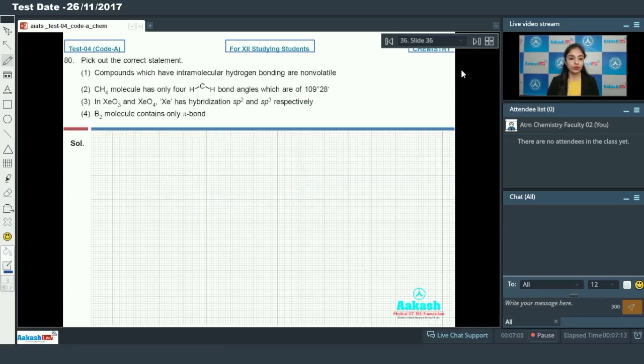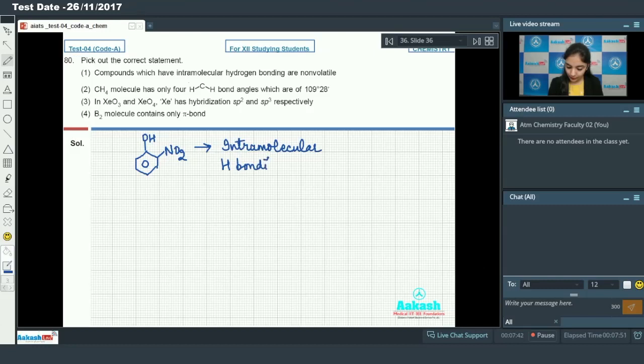Moving on to the next one. We have question number 80 in which we have to pick out the correct statement. In the first case we have the compounds which have intramolecular hydrogen bonding are non-volatile. I will give you an example of a compound which shows the intramolecular hydrogen bonding which is ortho-nitrophenol. In this case we have intramolecular hydrogen bonding.